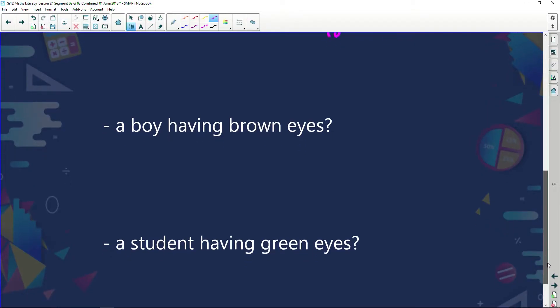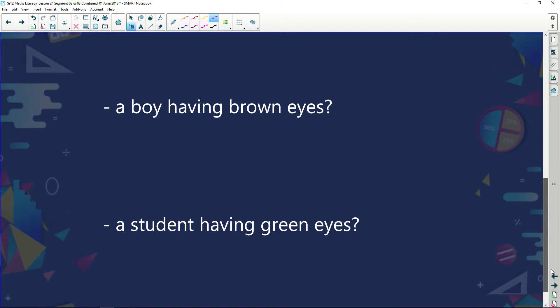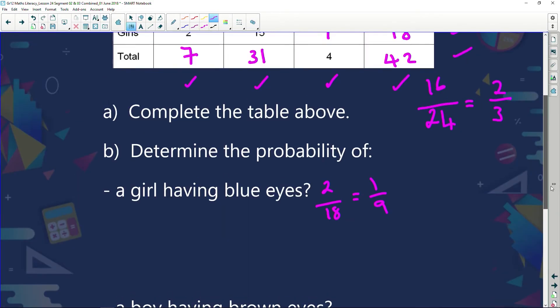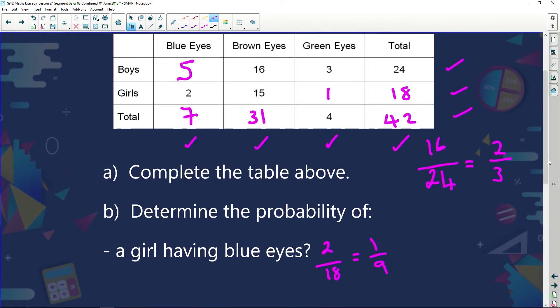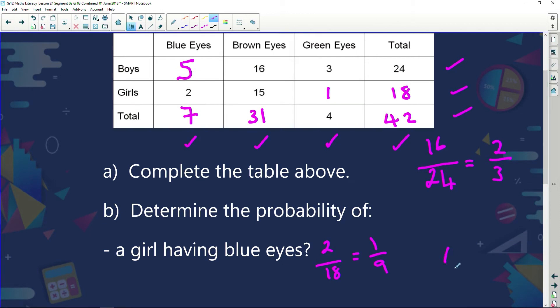Next one. What's the probability of a student having green eyes? How many students are there? There are 42 students. How many have green eyes? 4. 4 out of 42. When we simplify that we're going to get 2 out of 21 chances of selecting a student at random that will have green eyes. Interesting, isn't it?